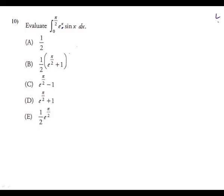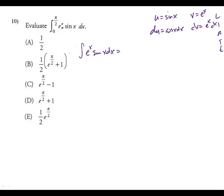Using LIATE, sine wins for U. So U equals sine X, DU equals cosine X, DX. DV equals e to the X, DX, so V equals e to the X. This gives: integral of e to the X sine X, DX equals sine X times e to the X minus the integral of e to the X cosine X, DX.